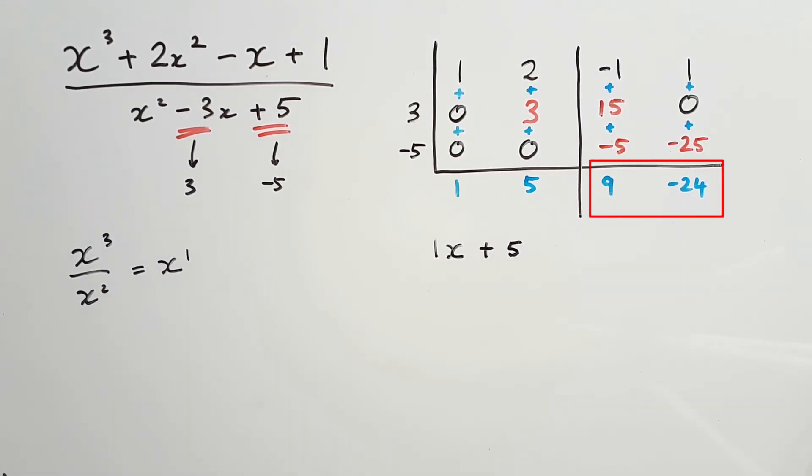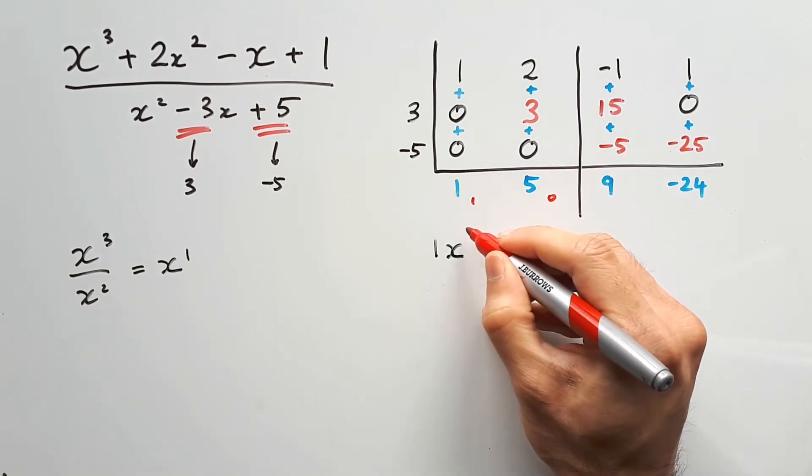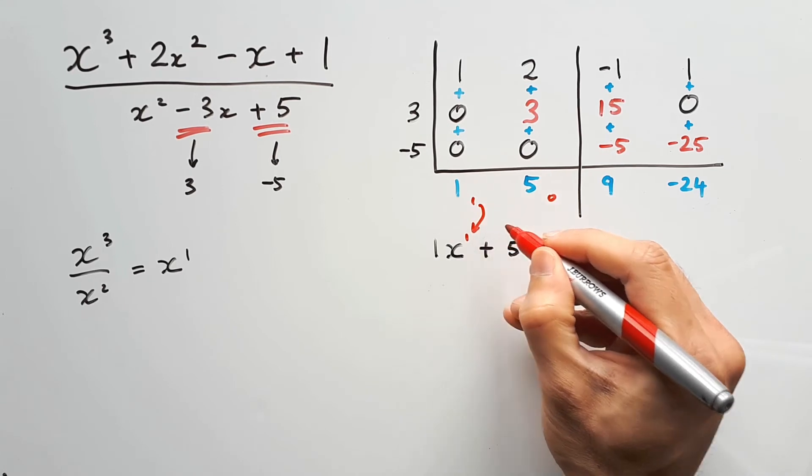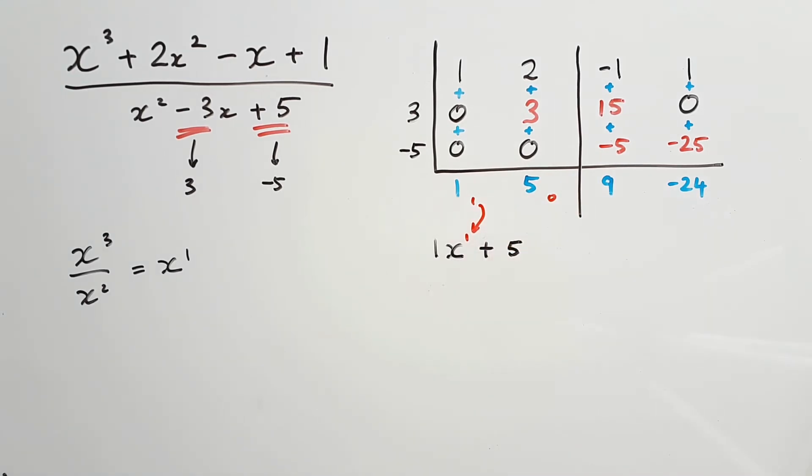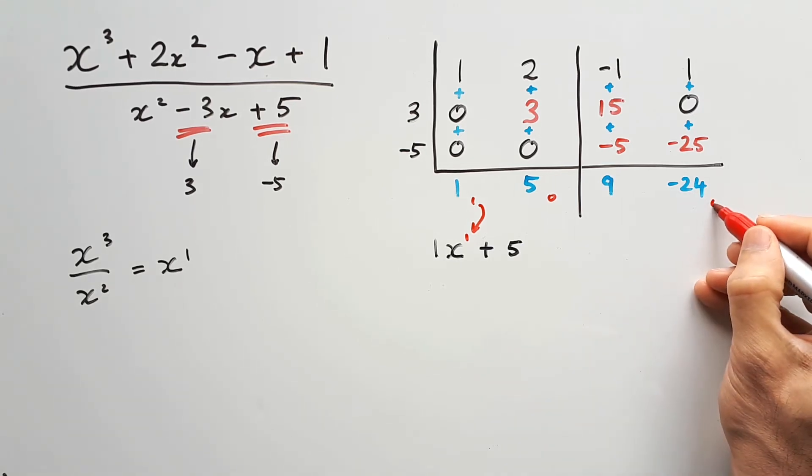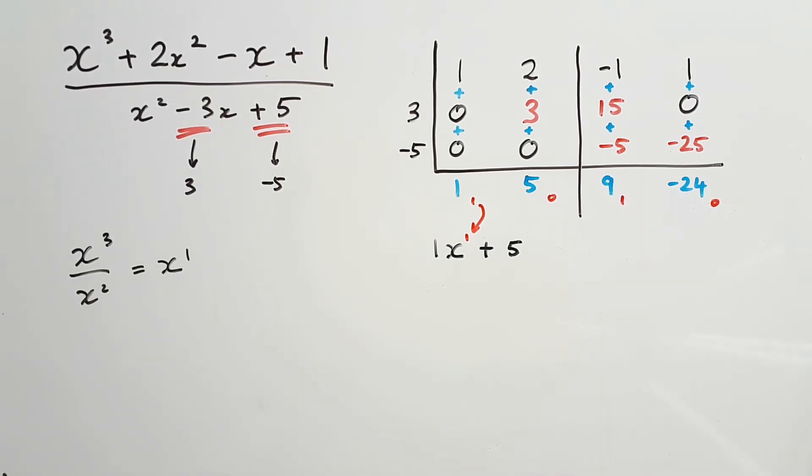But the remainder looks a little bit different from our typical kind of synthetic division. There's two numbers here. So I find it a lot easier to figure out what kind of expression to write by first counting up from 0 from the right side. You can do this for the quotient as well. So if you write a little 0 next to the 5 and count up from there, there'll be a 1 next to the big blue 1, and that red little 1 represents the power of 1 for x. Doing something similar for 9 and negative 24, we find that the remainder is going to be 9x to the power of 1 minus 24.